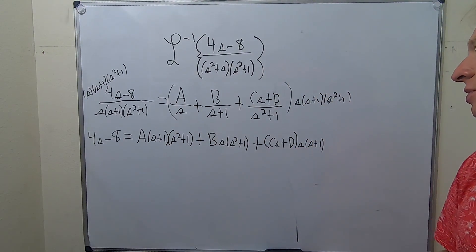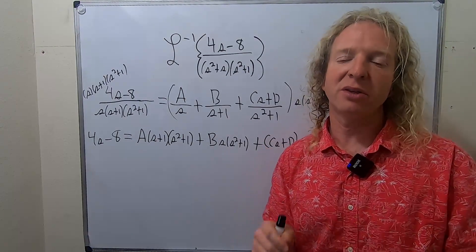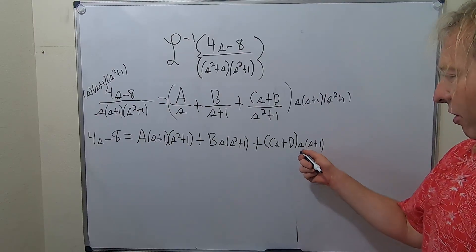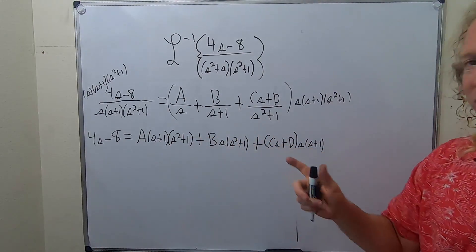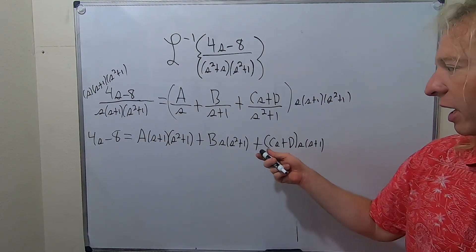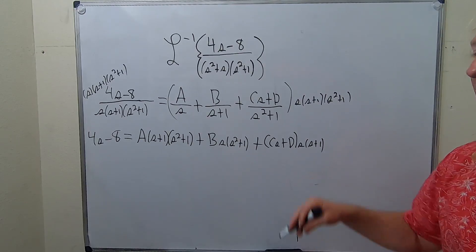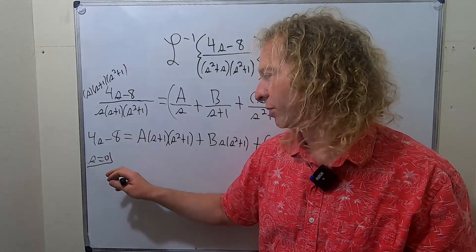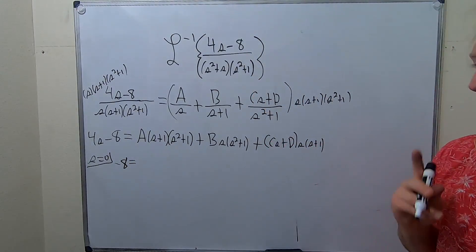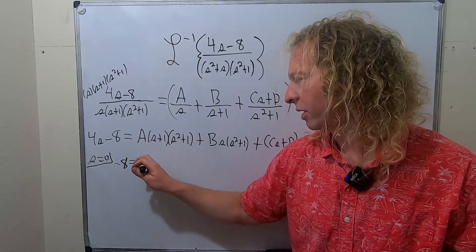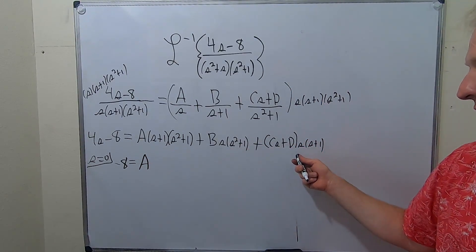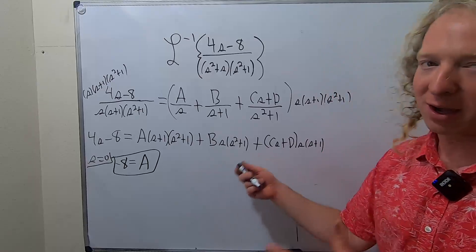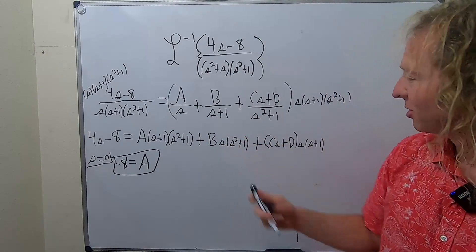The next step is to ask yourself: is there anything I can plug in that will make things go away and immediately give you one of the variables? There are two numbers that will do that — zero, because all of this will go away and you'll get A, and negative 1, because the B term survives. Plugging in s equals 0, we get negative 8 equals A. So A equals negative 8.